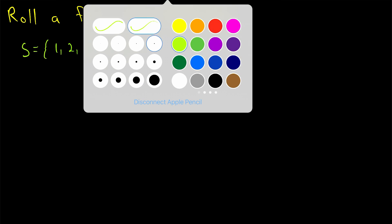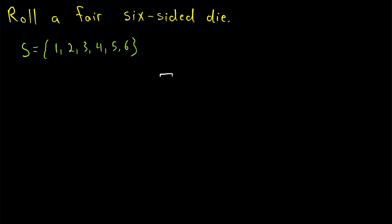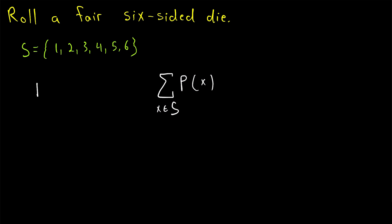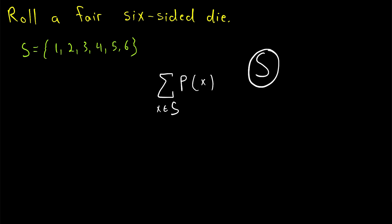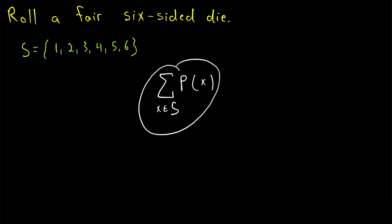Let's quickly justify why that must be the case. Imagine we have some experiment with a sample space S. Suppose we add up the probabilities of all the outcomes in that sample space. This summation notation just means add up all the probabilities P of x for every x in the sample space S. In the case of our die example, that would be P of 1, plus P of 2, plus P of 3, and so on. What must this sum be equal to?